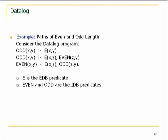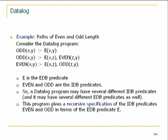Here one predicate is used to define the other — there is a path of odd length if there is an edge, or there is a Z with an edge from X to Z and a path of even length from Z to Y, and the other way around. So we have two recursive predicates (IDBs), even and odd, and one EDB. The datalog program gives us a recursive specification of the IDB predicates in terms of the given EDB predicate E.